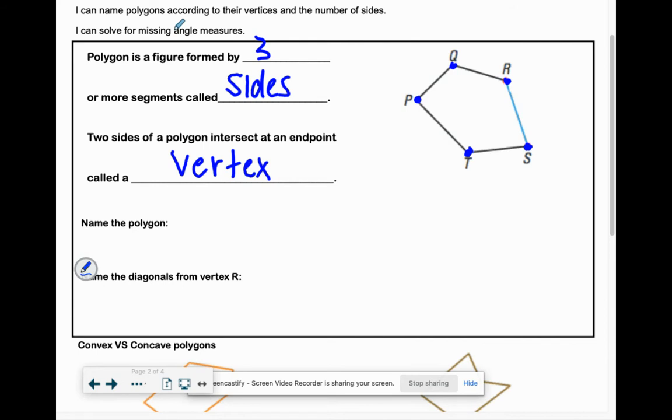If you wanted to name a polygon you would just say polygon and then list your vertices. It doesn't matter which one you start at as long as you just kind of go in order from there. So if we want to start at T, you could say T P Q R S.